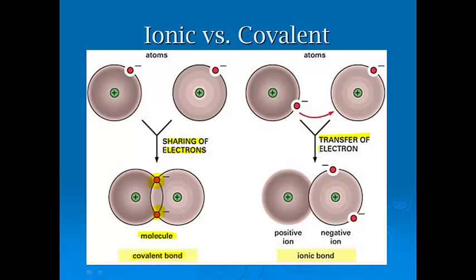And then over here we have the transfer of electrons, where an electron is actually donated and given away. That results in an ionic bond, because you have the positively charged cation and the negatively charged anion that are attracted to one another.